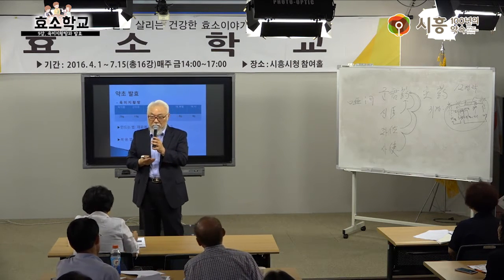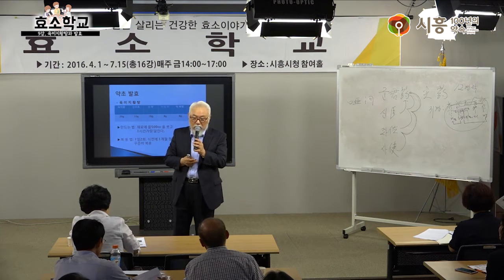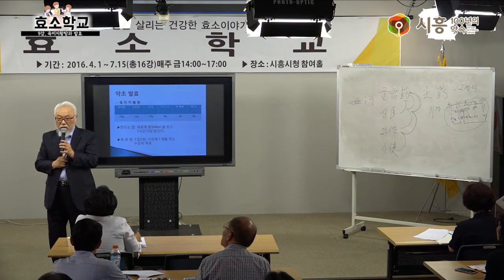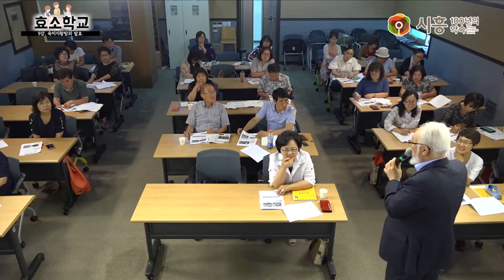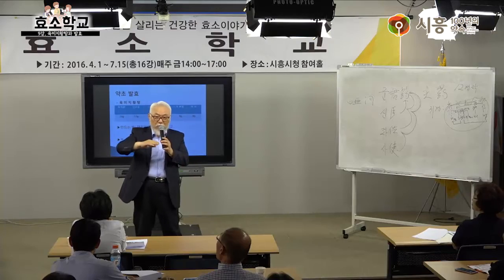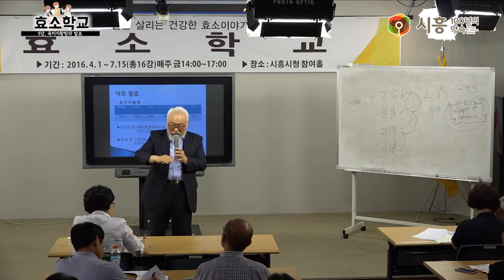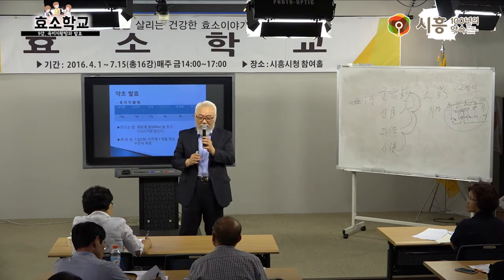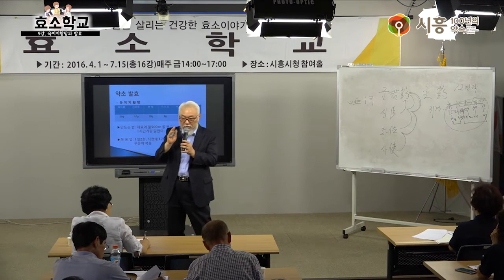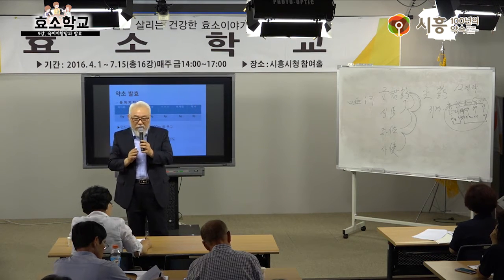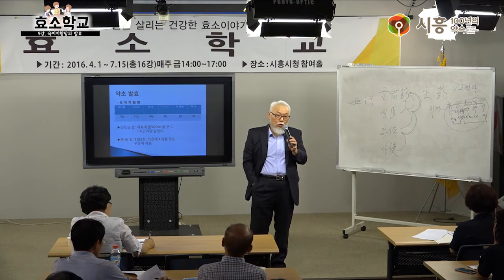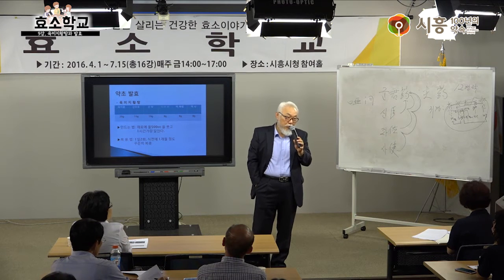약을 달일 때 선전이 필요한 약재가 있습니다. 별갑(자라 껍데기), 구판(거북이 껍데기), 오공, 석고, 주사 같은 광물성이나 동물성 약재는 미리 끓여야 합니다. 반대로 후하는 나중에 넣는 약재인데, 침향, 목향 같은 향이 날아가는 것들은 나중에 넣어야 합니다.